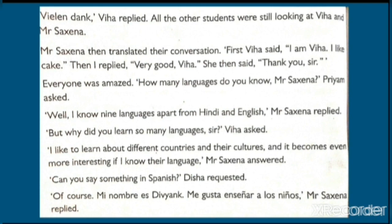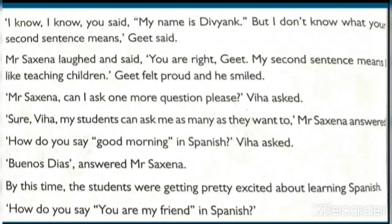Of course — me nombre es Divyank, me gusta enseñar a los niños, Mr. Saxena replied. I know, I know — you said my name is Divyank, but I don't know what your second sentence means, said Geech. मुझे पता है आपने पहले कहा कि मेरा नाम Divyank है, पर आपने दूसरी line में क्या बोला, वह मुझे नहीं पता। Mr. Saxena laughed and said — you are right, my second sentence means I like teaching children. Geech felt proud and smiled. Mr. Saxena ने कहा — तुम सच कह रहे हो Geech, मेरा second sentence था कि मुझे बच्चे पढ़ाना बहुत पसंद है। Geech अपने आप को proud feel करने लगा।